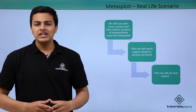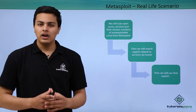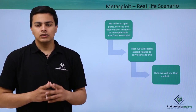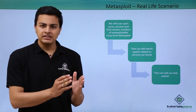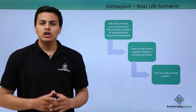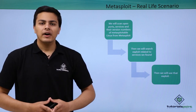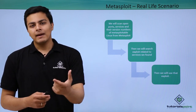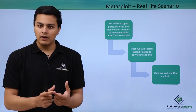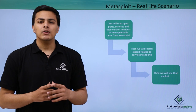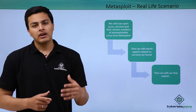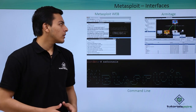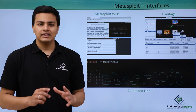Now let's discuss a real-life Metasploit scenario — how penetration testers use Metasploit in practice. There are three steps. First, find open ports, their services, and version numbers running on the remote system. Second, search the Metasploit Framework database for an exploit corresponding to that version number. Third, if that exploit exists in the database, use it to exploit the system.